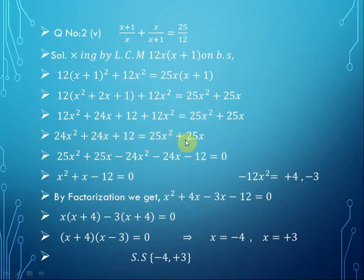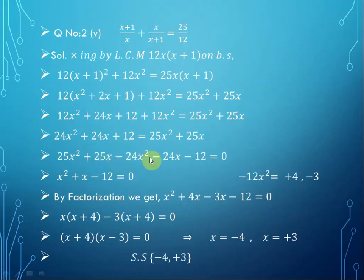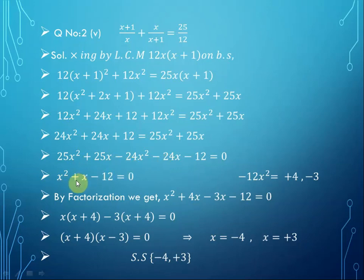We move all values from the left side to the right side, changing their signs. So we get 25x² plus 25x minus 24x² minus 24x minus 12 equals 0. On simplification, 25x² minus 24x² gives x², and 25x minus 24x gives x, so: x² plus x minus 12 equals 0.